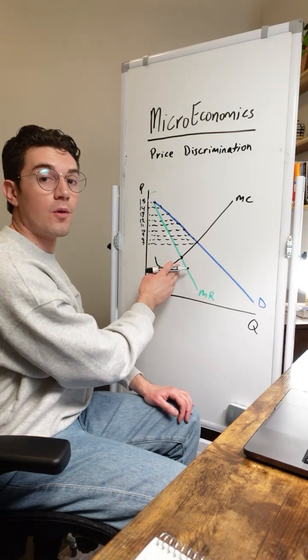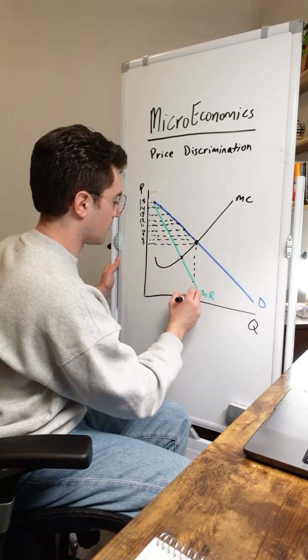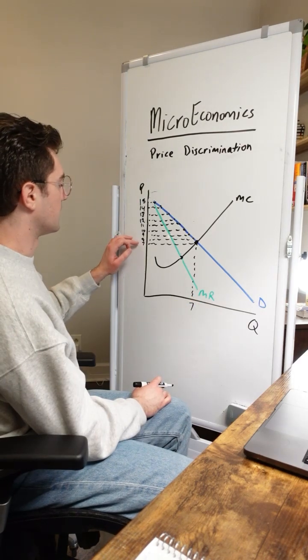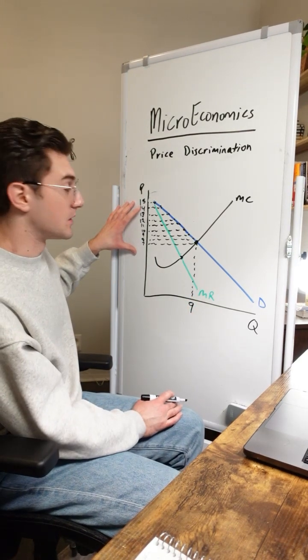So this monopoly is actually going to ignore the MR equals MC point. They're going to output this many units here. We'll call it seven. I guess technically we do one, two, three, four, we'll call it nine units because we've mapped out nine consumers here.